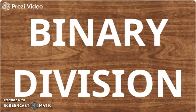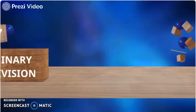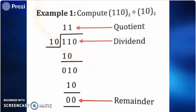Now we will discuss binary division. The method to perform binary division is same as that of decimal numbers. Binary subtraction is the key to binary division, so we have to follow the rules of binary subtraction in some cases of binary division. In the first example, we are going to divide 110 base 2 by 10 base 2. The quotient will be 1 and we will get the remainder as 10. Again, when we divide 10 with 10, we will get the remainder as 00.